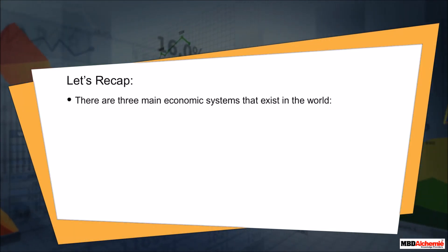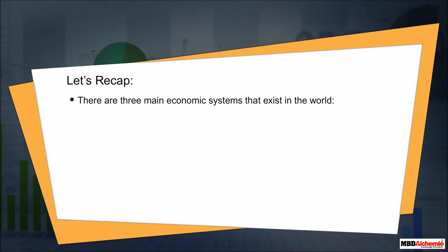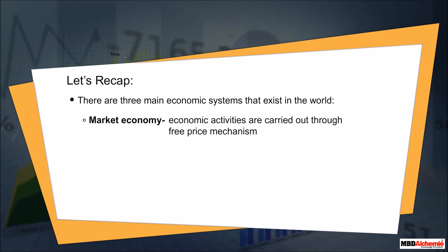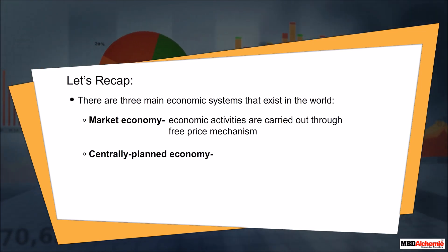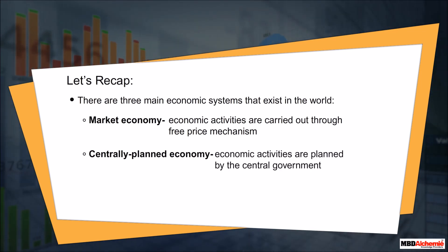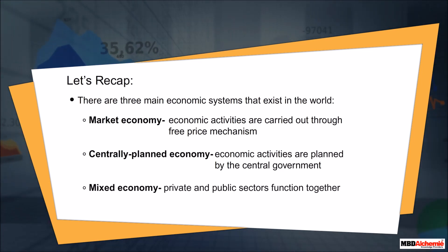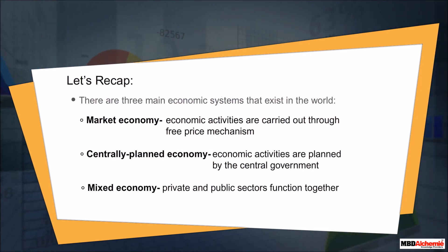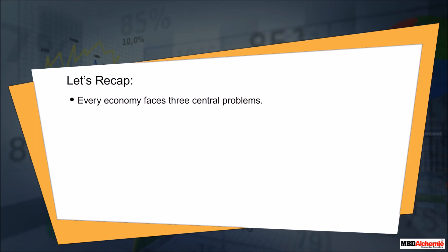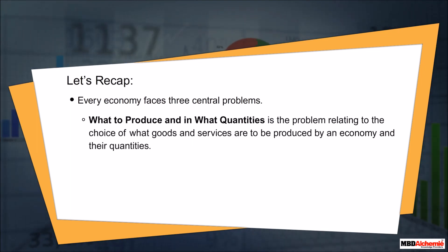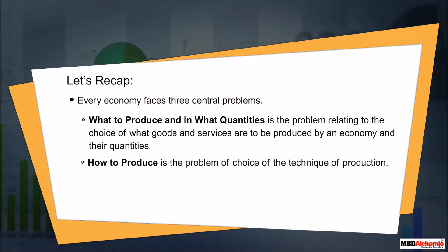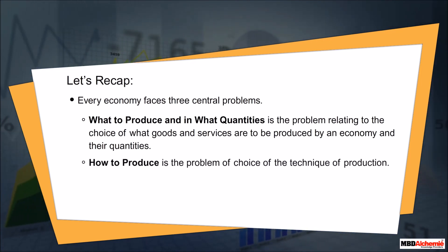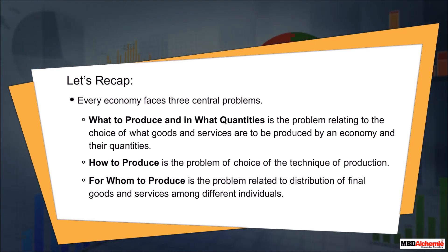To recap: there are three main economic systems — market economy, where economic activities are carried out through a free price mechanism; centrally planned economy, where economic activities are planned by the central government; and mixed economy, where private and public sectors function together. Every economy faces three central problems: what to produce and in what quantities is the problem related to the choice of goods and services; how to produce is the problem of choice of technique of production; and for whom to produce is the problem related to distribution of final goods and services among different individuals.